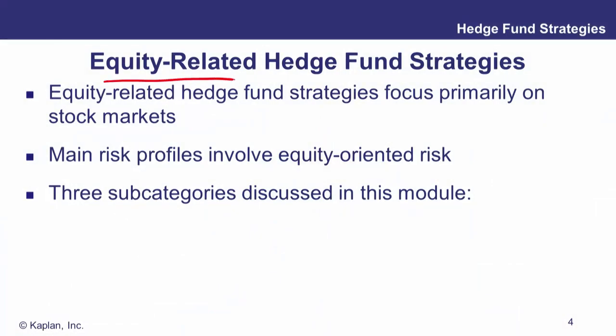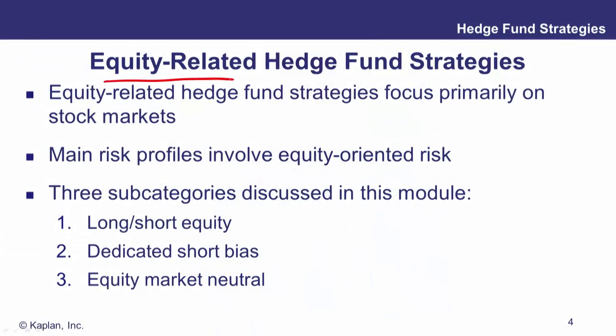Let's have a look at our first overall strategy in this hedge fund reading, and that's going to be equity-related. As the name suggests, equity-related hedge fund strategies are focusing primarily on equities, and the main risk factor is equity-oriented risk. We've got three sub-categories within that: long-short equity, a dedicated short bias, and an equity-market neutral strategy.